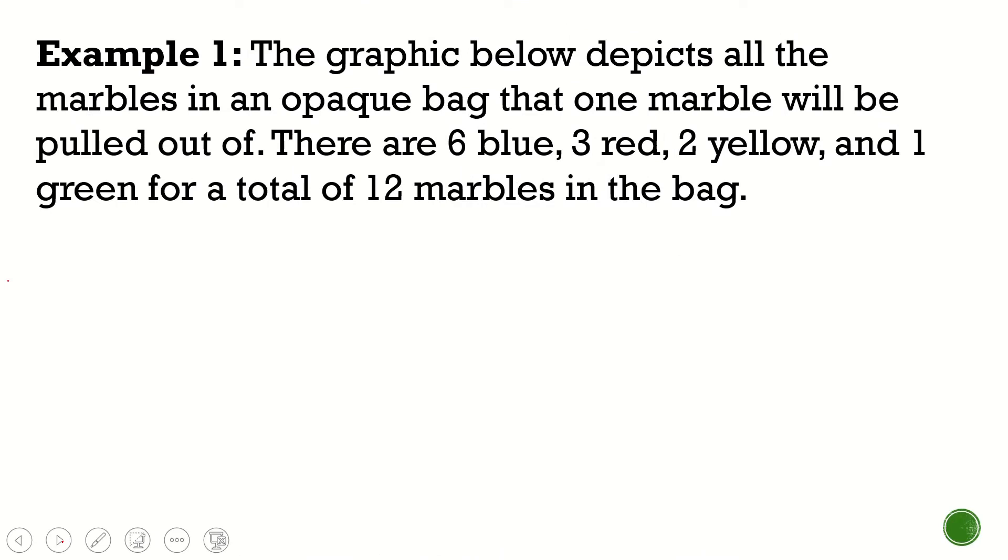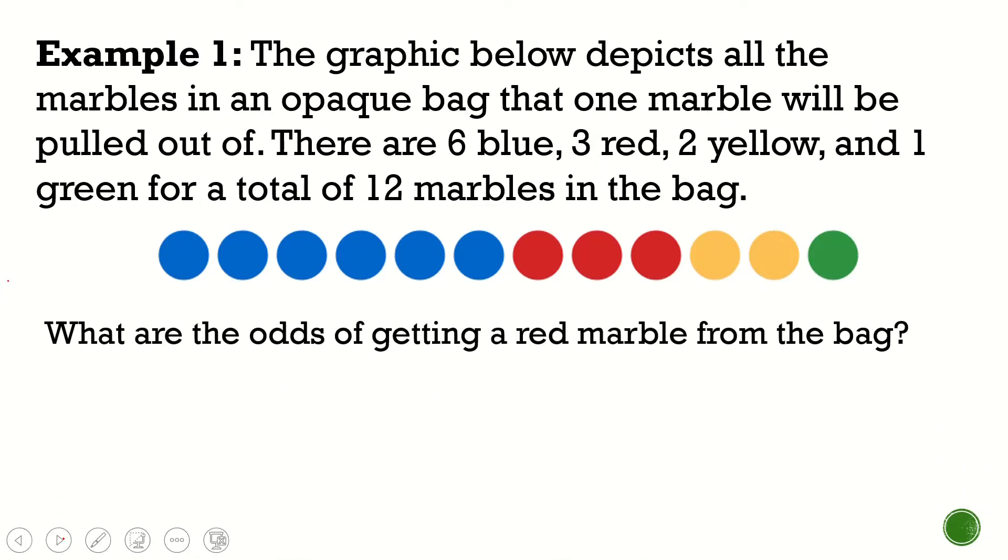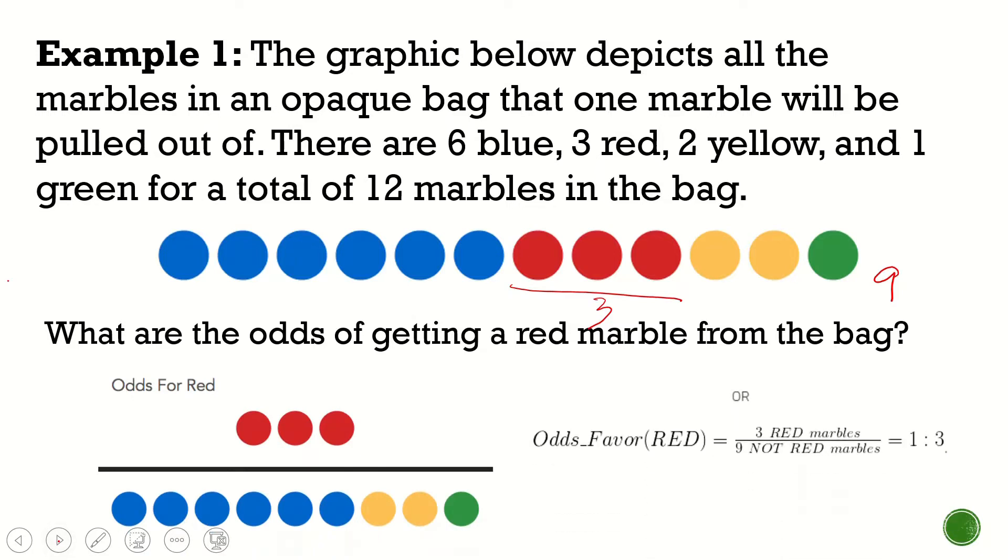Let's go to the first one. The graphic below depicts all the marbles in an opaque bag that one marble will be pulled out. There are six blue, three red, two yellow, one green for a total of 12 marbles in a bag. What are the odds of getting a red marble? So red marble, we have three. There's a total of 12 marbles. So 12 minus 3 is equal to 9. So 9 are the marbles that are not red. So that's 3 is to 9. So that will be the answer. 3 over 9. 3 is to 9 or one third. You need to simplify the answer.